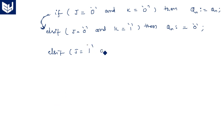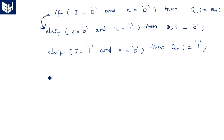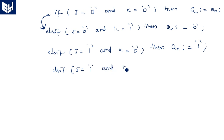Else if J = '1' and K = '0' then qn := '1'. Else if J = '1' and K = '1' then qn := not qn — when both J and K are 1, the output toggles, which is the complement of the previous state.